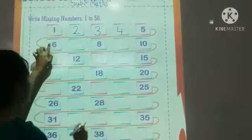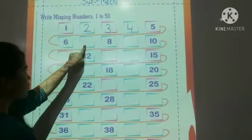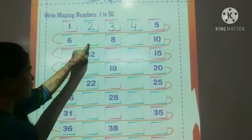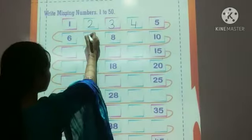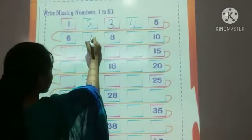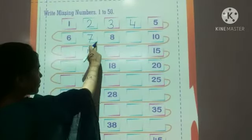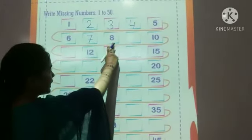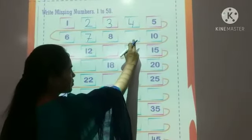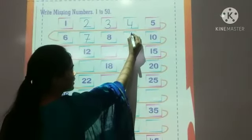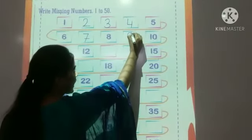After 5 comes 6. After 6, which number is missing from here? Yes, number 7. Then 6, 7, 8. Which number is missing from here? Yes, number 9.